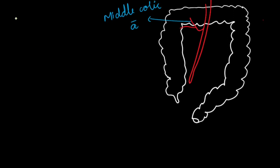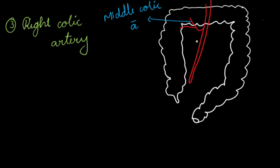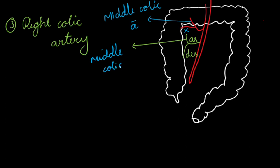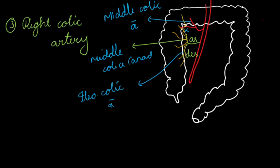Now we will discuss the right colic artery. This artery arises from the concavity of the superior mesenteric artery and divides into an ascending branch and a descending branch. The ascending branch anastomoses with the middle colic artery, and the descending branch anastomoses with the ileocolic artery, which is also a branch of the superior mesenteric artery.